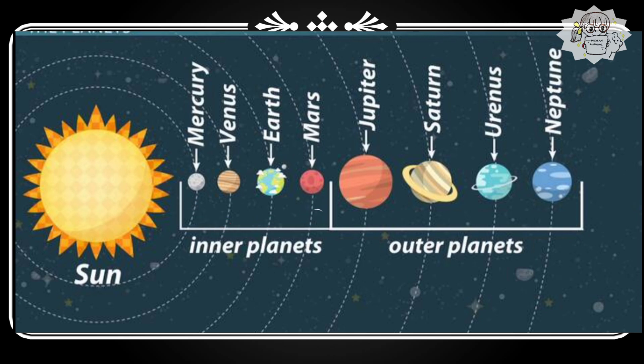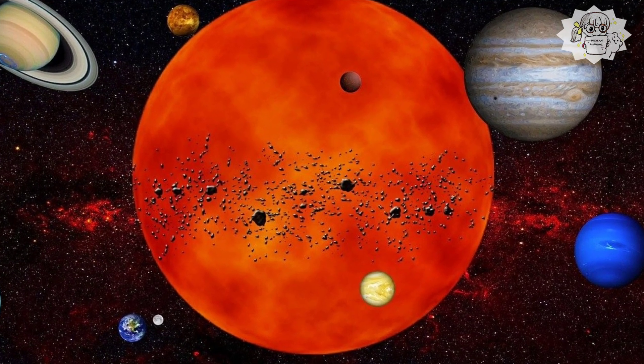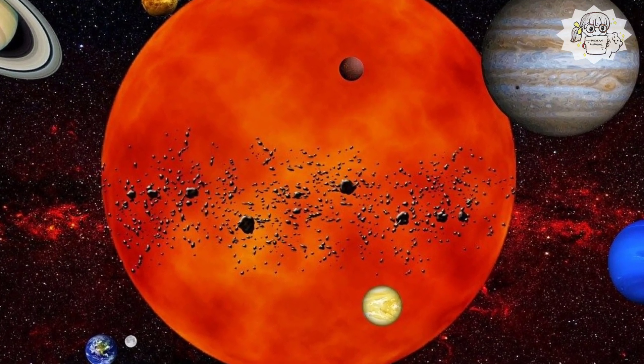The planets fall into two groups: four small rocky planets near the Sun - Mercury, Venus, Earth, and Mars - and four giant planets far from the Sun - Jupiter, Saturn, Uranus, and Neptune. Now let's see one by one: Sun, Moon, and the planets.